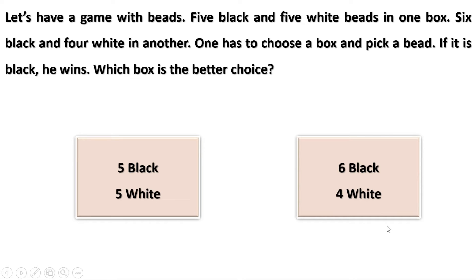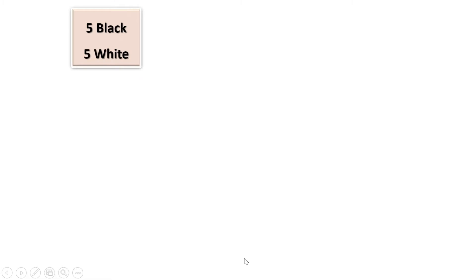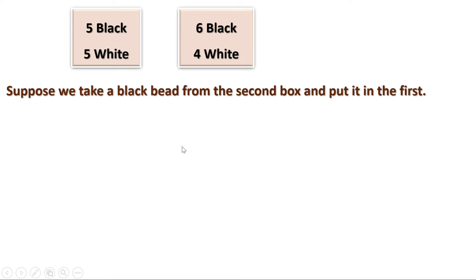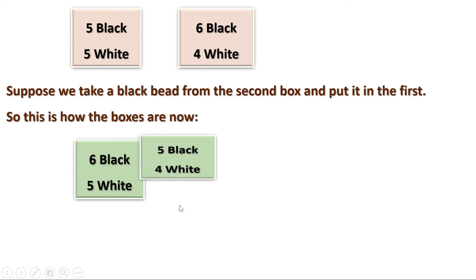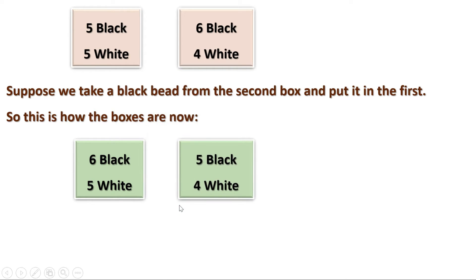Now suppose we take one black bead from the second box and put it in the first. When we take one black bead from the second box, there will be only 5 black beads remaining there. If we put one black bead in the first box, there will be 6 black beads in it. So our boxes are now: 6 black and 5 white beads in the first one, and 5 black and 4 white beads in the second one.